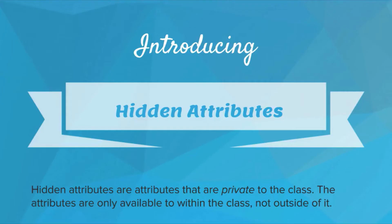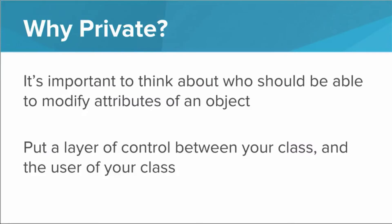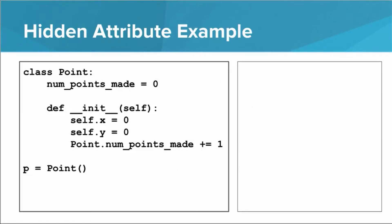Introducing hidden attributes. Hidden attributes are attributes that are private to the class — they can only be accessed by code inside the class, not outside of it. It's important to think about who should be able to access and modify the attributes of an object. Hidden attributes allow us to put a layer of control between the class and the code that is using the class. So we don't want it to be possible for any code outside of the class to change numPointsMade.